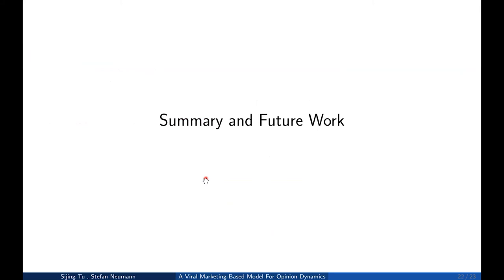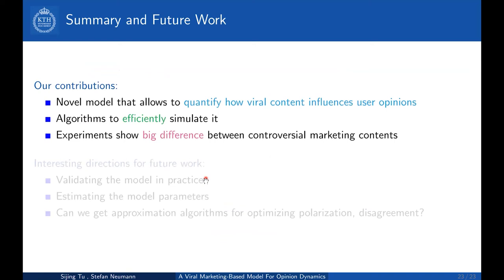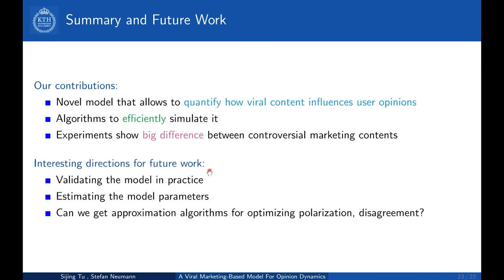In summary, our contribution is that we define a novel model that allows us to quantify how viral content influences user opinions, provide algorithms to efficiently simulate it, and conduct experiments to show the differences between different types of content spreading in the network. Interesting future directions include: how to evaluate our model in practice (which is very hard even for the original FJ model), how to estimate model parameters, and how to design approximation algorithms for optimizing polarization and disagreement. Thank you, that's it for the presentation. Do you have any questions?